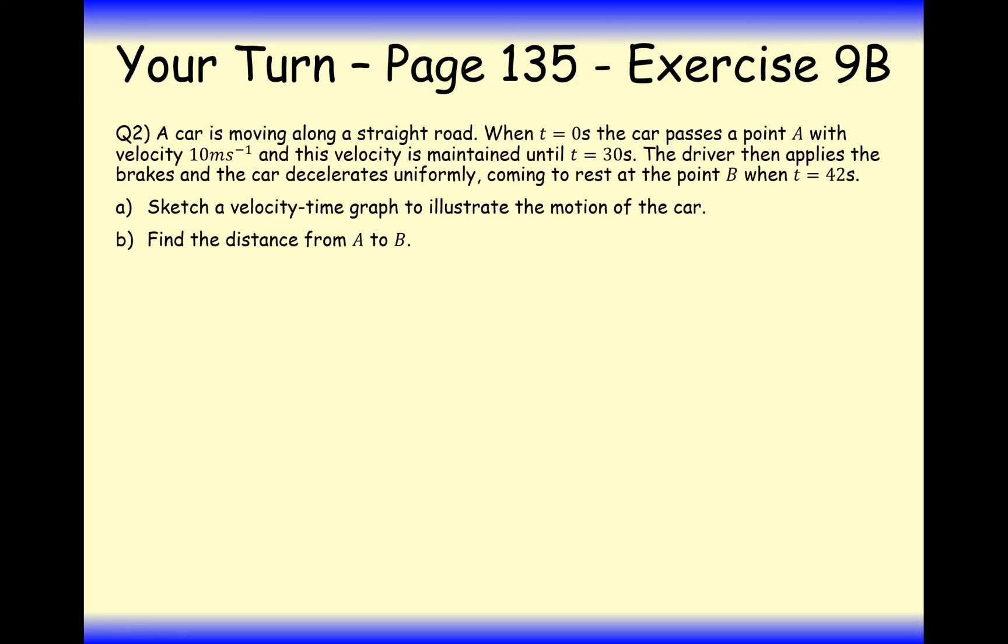A car is moving along straight roads. When t equals 0, the car is at point A with a velocity 10 meters per second. I've read a little bit ahead here, part A is asking me to draw a velocity time graph, so we'll start now. So part 2, 0, so we're starting at 10 meters per second here on the velocity axis there. This is in meters per second, and we're on seconds down on this axis here.